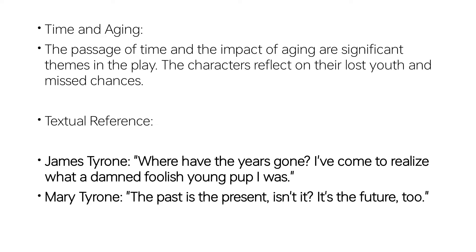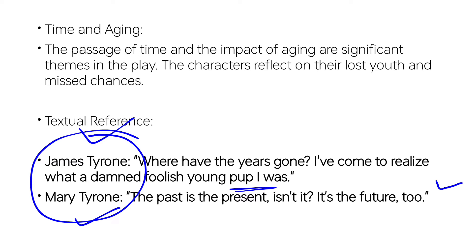The quotation for this theme is: James Tyrone says, 'Where have the years gone? I have come to realize what a damned foolish young pup I was.' This reflects on the past. James Tyrone and Mary Tyrone, as husband and wife, talk about the past and aging, and this quotation proves that the theme is complete. Then we start the next theme.